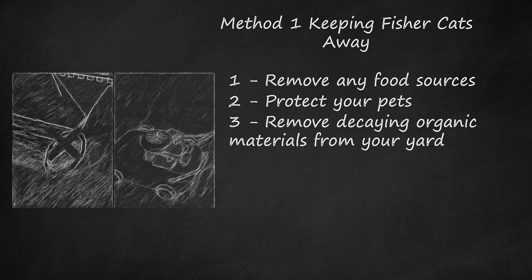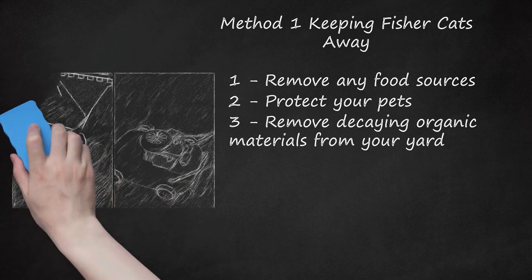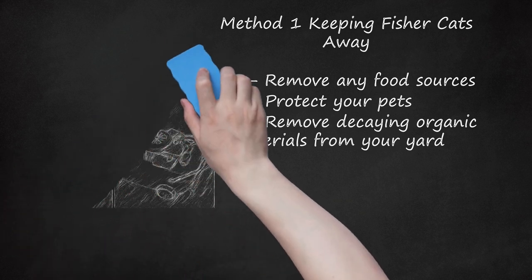Locate your coop away from woodlands. If your chicken coop is situated right next to the fisher cat's natural habitat, they will find it more easily. Woodlands contain many predators that will target chickens, not just fisher cats.